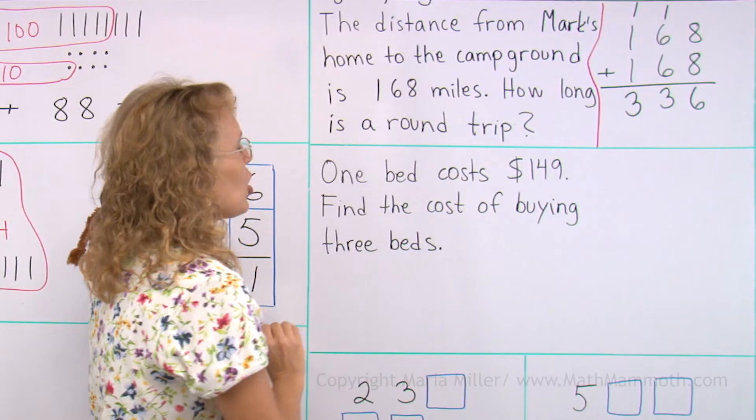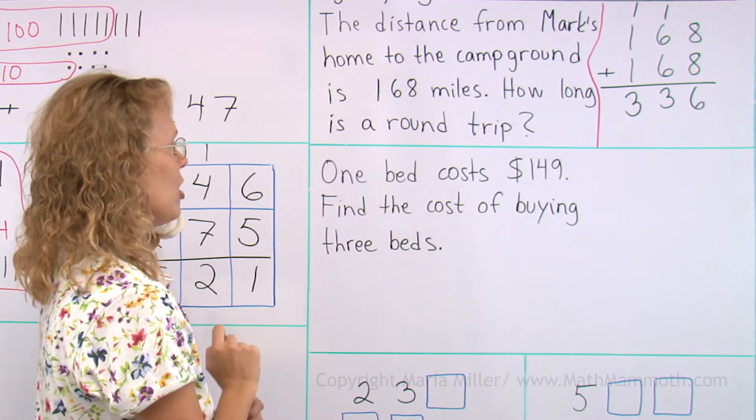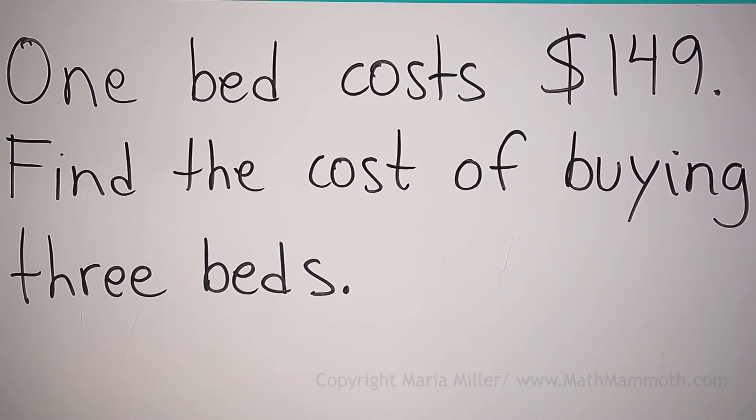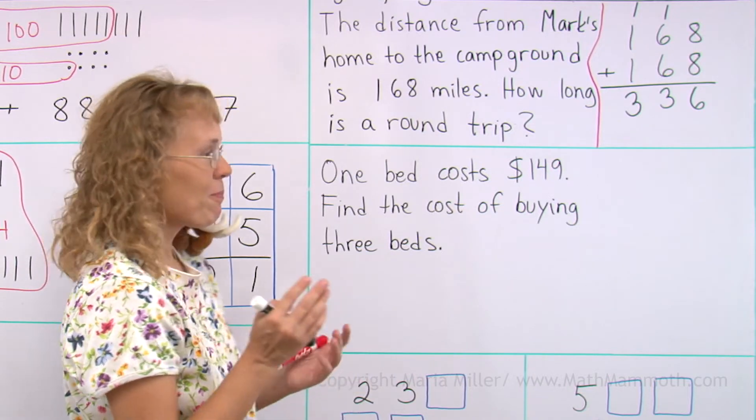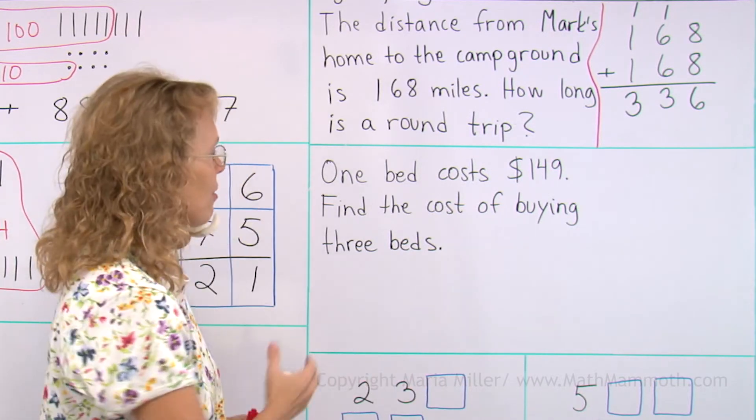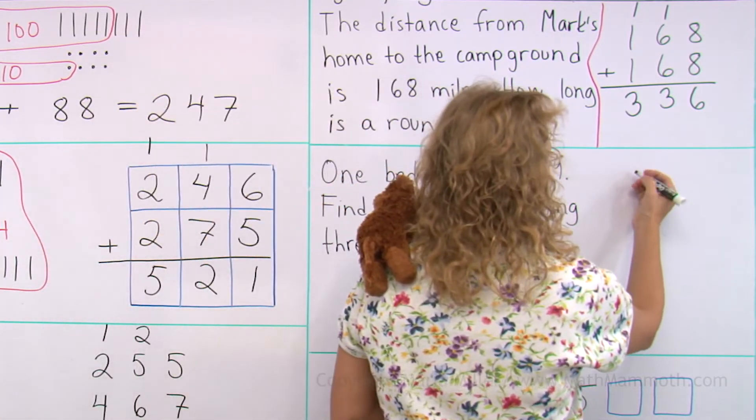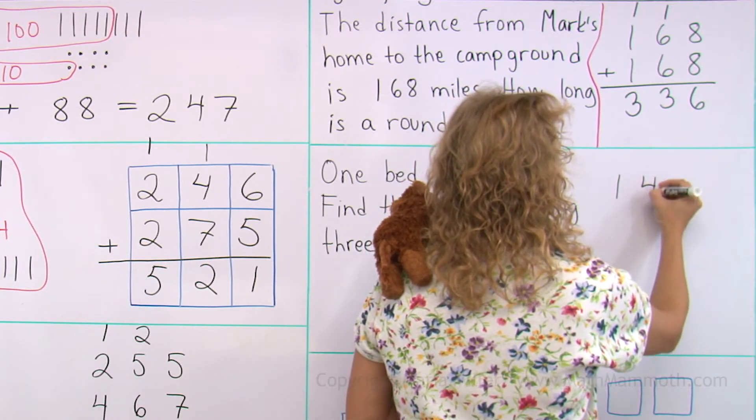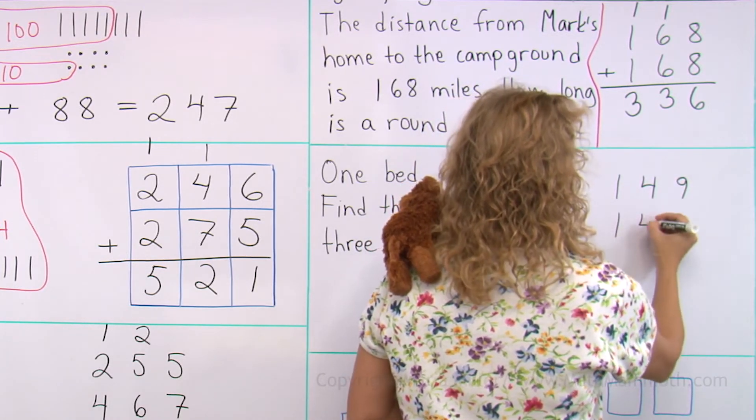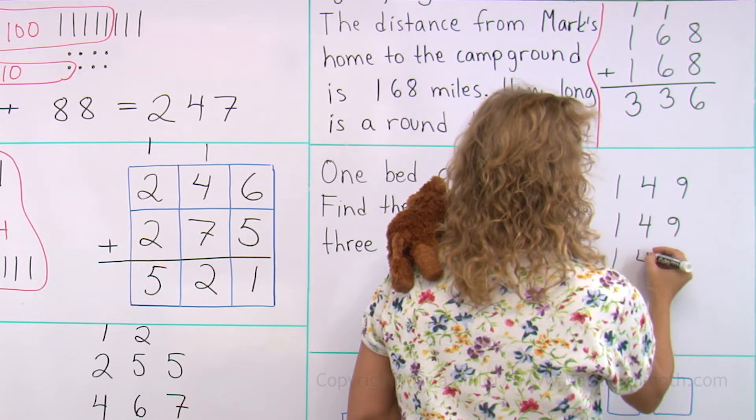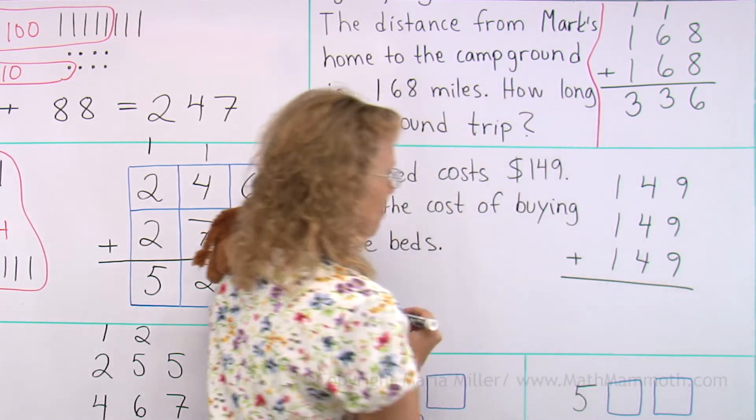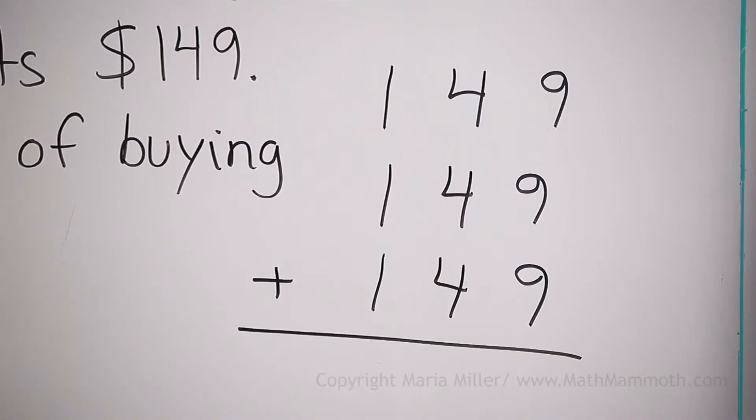It's not difficult, is it? One bed costs $149. Find the cost of buying 3 beds. We need to add. Find the total cost. So I do the same. I write 149 and the same number and the third time and add. Pause the video and try it yourself.